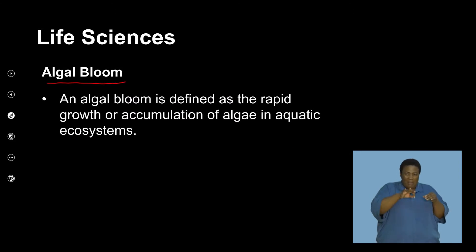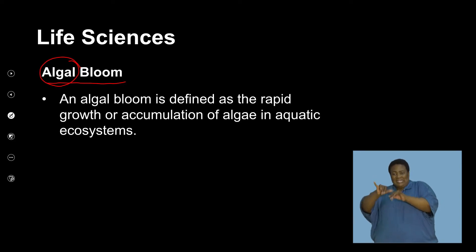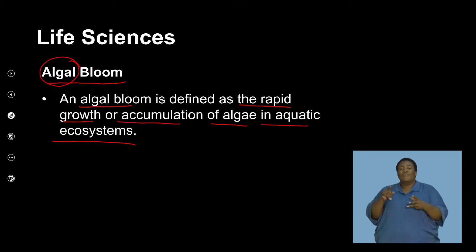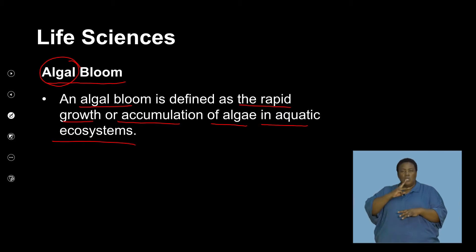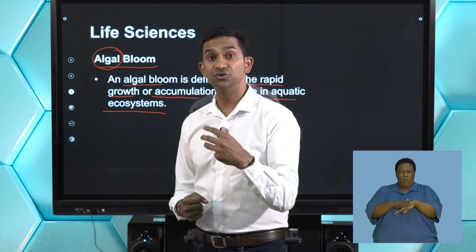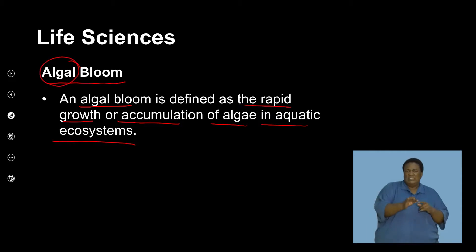Algal bloom comes from the word algae — a type of aquatic organism that lives in water and is able to photosynthesize. Algal bloom is defined as the rapid growth and accumulation of algae in aquatic ecosystems. Algae generally tends to grow in water bodies, and the more stagnant the water, the more predominant the algae. However, certain factors cause an increase in algae growth that is not always conducive to the living of other marine or aquatic organisms.